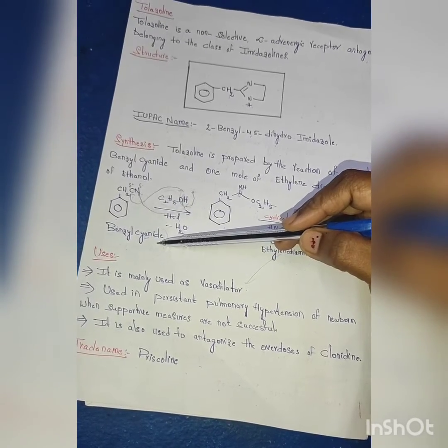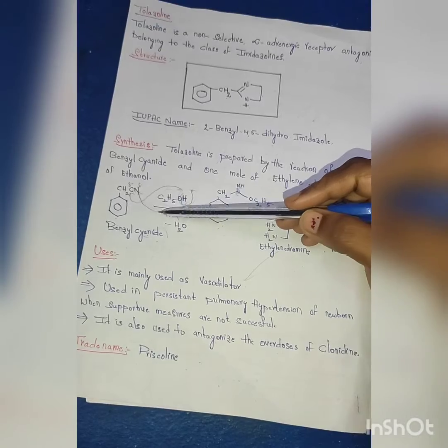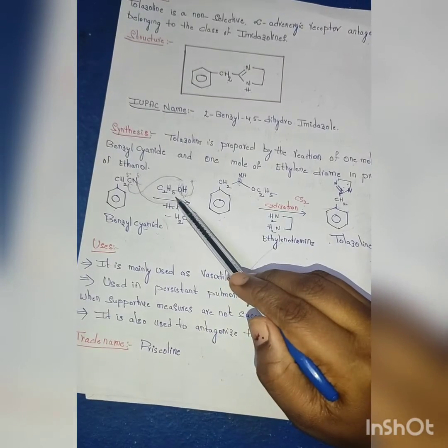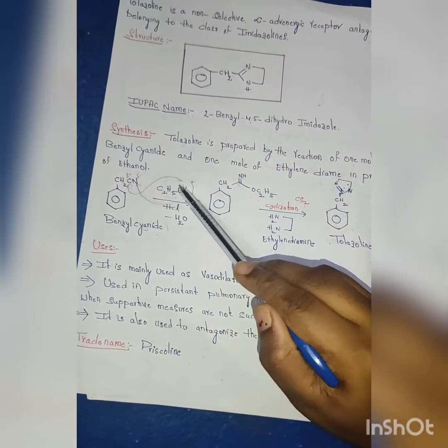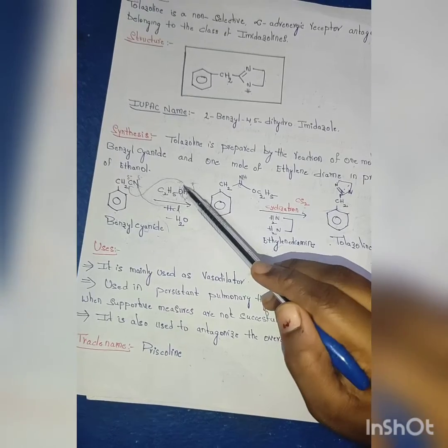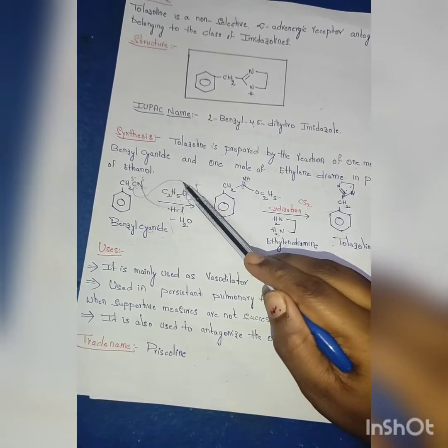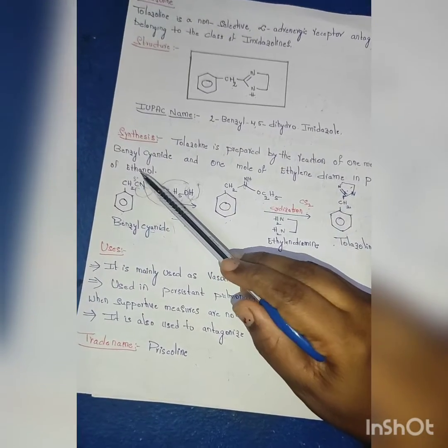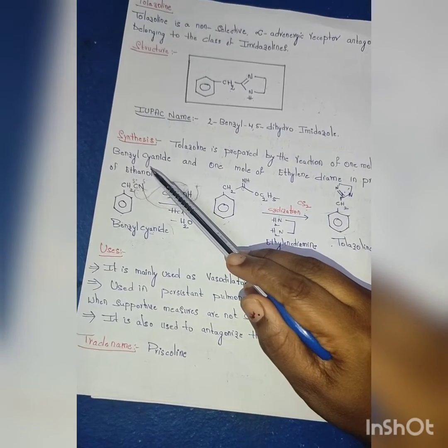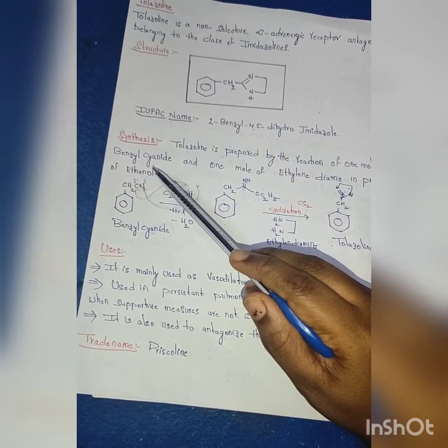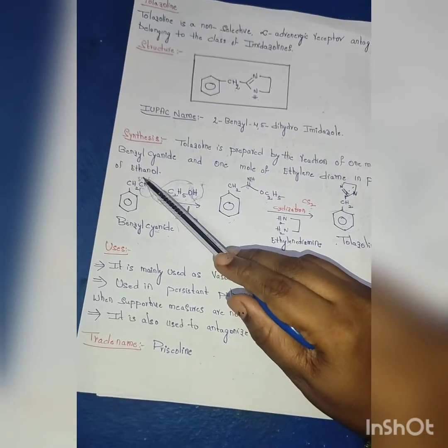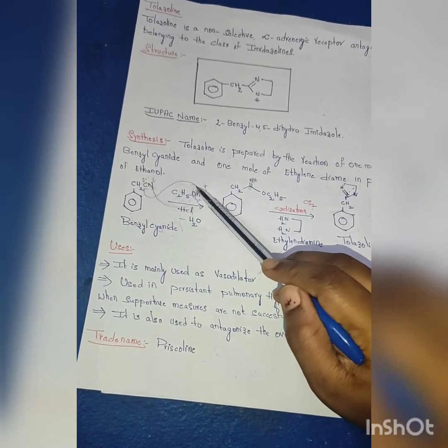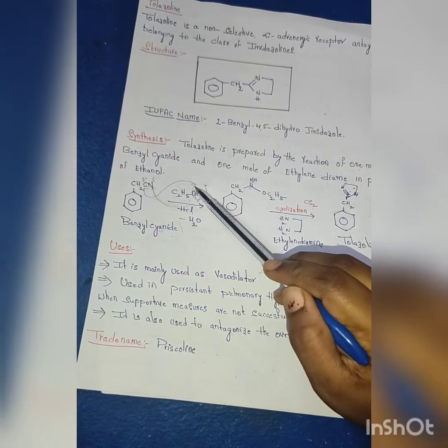This benzyl cyanide will react in the presence of ethanol, C2H5OH. First, please look at this: C2H5OH will ionize as C2H5O minus as well as H plus. CN is C triple bond N - carbon and nitrogen. Nitrogen is more electronegative, so nitrogen will have partial negative and carbon will have partial positive charge. This O minus will react with the positive carbon.